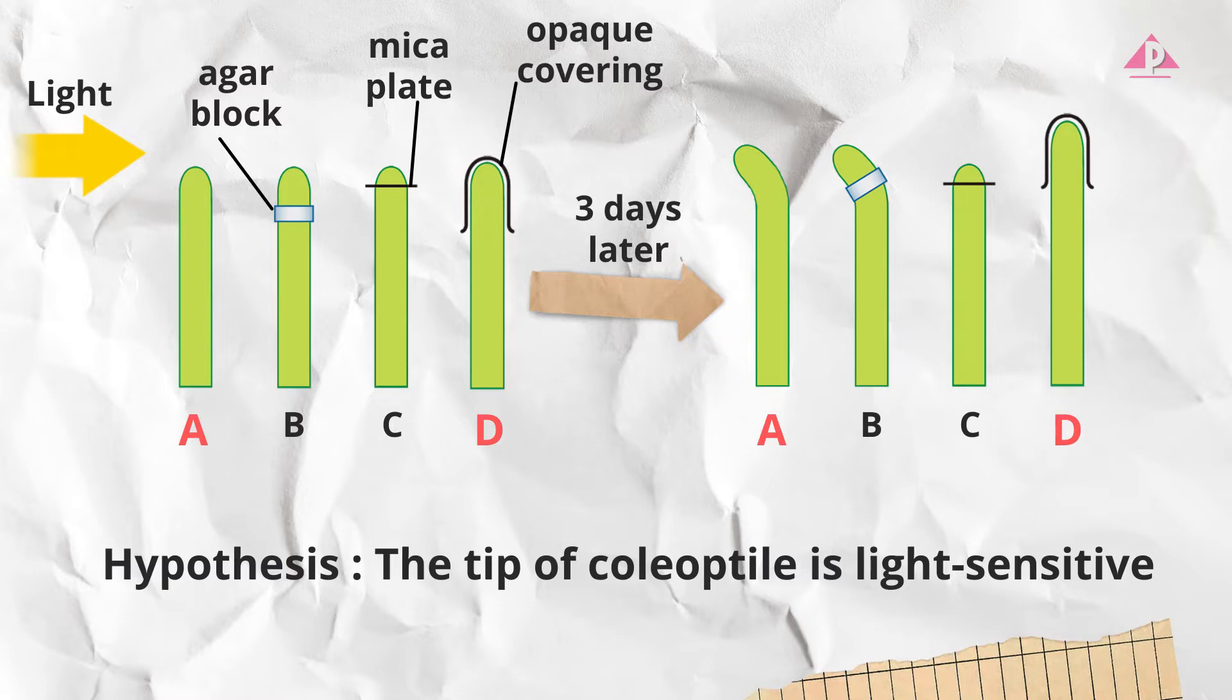This result shows that bending growth did not occur under unilateral light when the tip of the coleoptile was covered. This finding supports the hypothesis the tip of coleoptile is light sensitive.